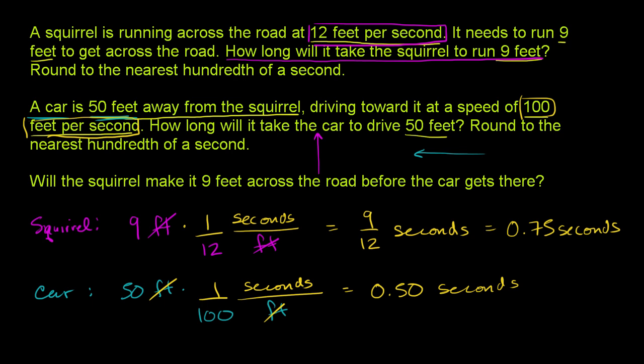And so now let's answer the question, this life and death situation for the squirrel. Will the squirrel make it 9 feet across the road before the car gets there? Well, it's going to take the squirrel 0.75 seconds to cross, and it's going to take the car only half a second. So the car is going to get to where the squirrel is crossing before the squirrel has a chance to get all the way across the road. So unfortunately for the squirrel, the answer is no.